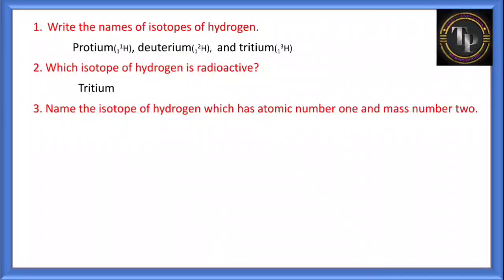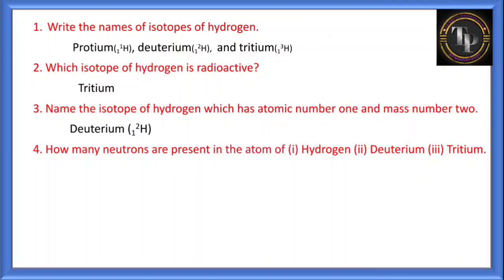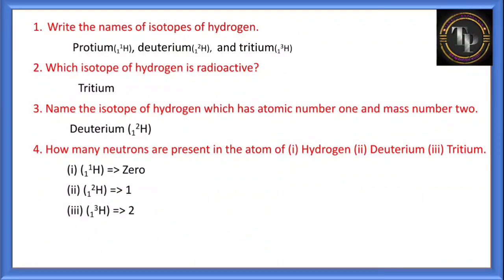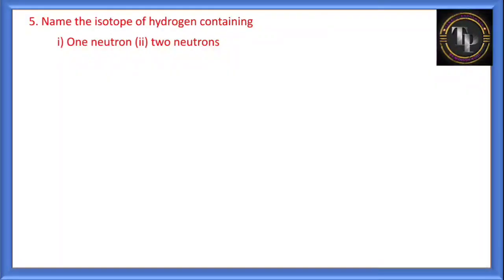Name the isotope of hydrogen which has atomic number one and mass number two — that is deuterium. How many neutrons are present in protium, deuterium, and tritium? Protium contains zero neutrons, deuterium contains one neutron, and tritium contains two neutrons. To calculate neutron number: atomic weight minus atomic number — so 1−1=0, 2−1=1, 3−1=2. Name the isotope containing one neutron: deuterium. Two neutrons: tritium. Which isotope has no neutron: protium.